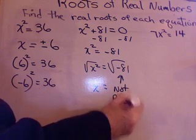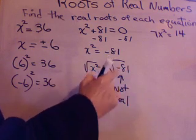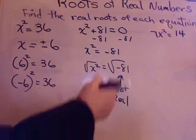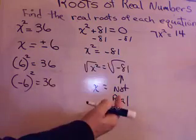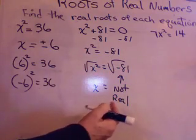Not real. So be careful. Even though you know the square root of 81, you can't do the square root of negative 81 because there are not two numbers exactly the same that you can multiply to get the square root of 81.